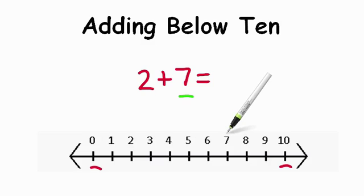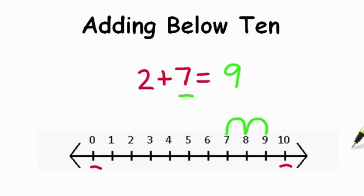You're right. 7 plus 2 more. One hop, 8. Second hop, 9. And we get an answer of 9. Awesome job.